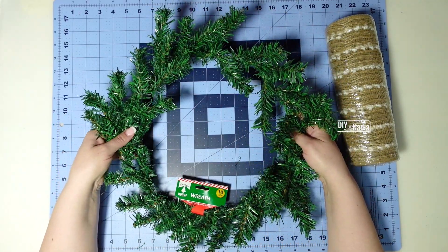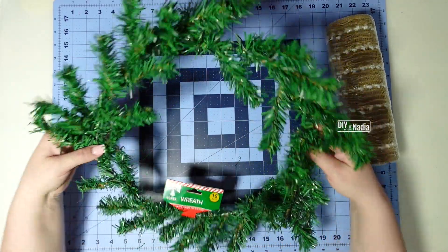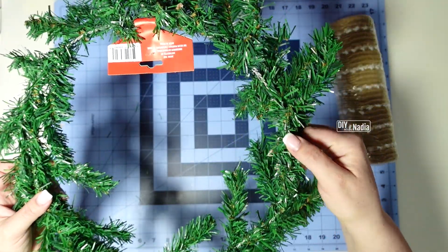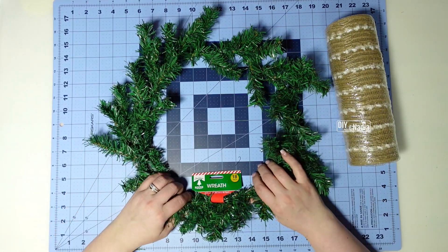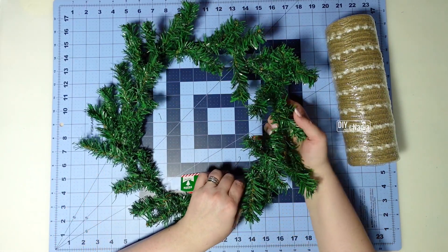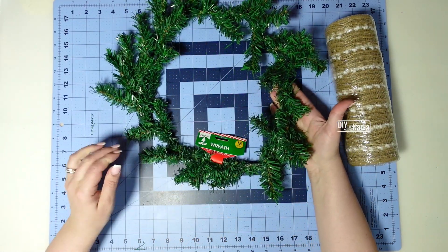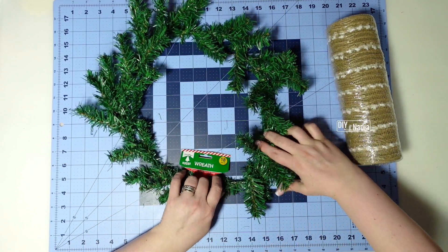The really cool part about using something like this is if you can see the back the wiring that they make this wreath with is really flexible. If I wanted to make a square wreath I can definitely just bend a corner and you saw how easy that was.